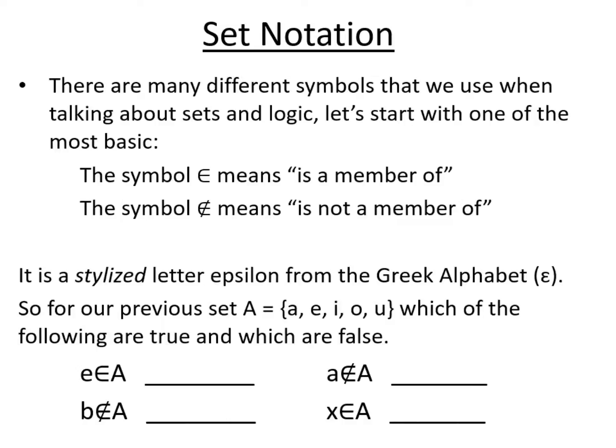And then finally X is a member of A. No it isn't, it's not there. So we can see that the first two are true and the second two are false symbolic statements.